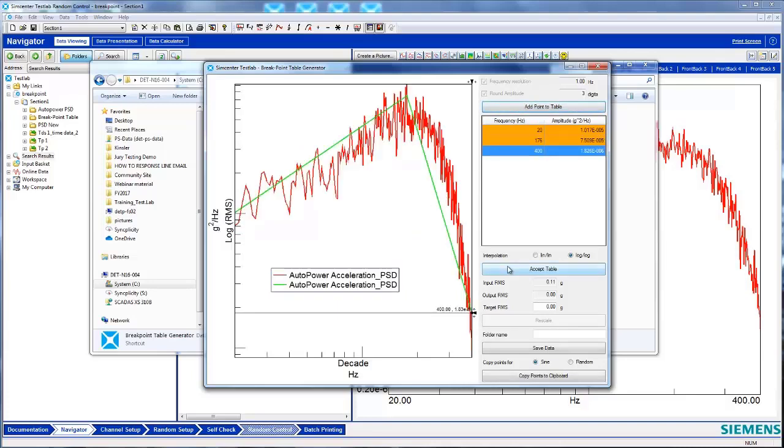When done, press the Accept Table button. You'll notice that the curve turns from green to blue.